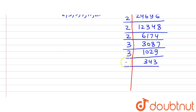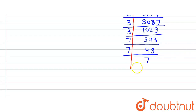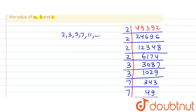343 is not divisible by 3, and not divisible by 5 either, so we move to the next prime number: 7. Since 7 × 49 = 343, dividing by 7 gives 49. Then 7 × 7 = 49, dividing by 7 gives 7. And 7 × 1 = 7, so the prime factorization is complete.